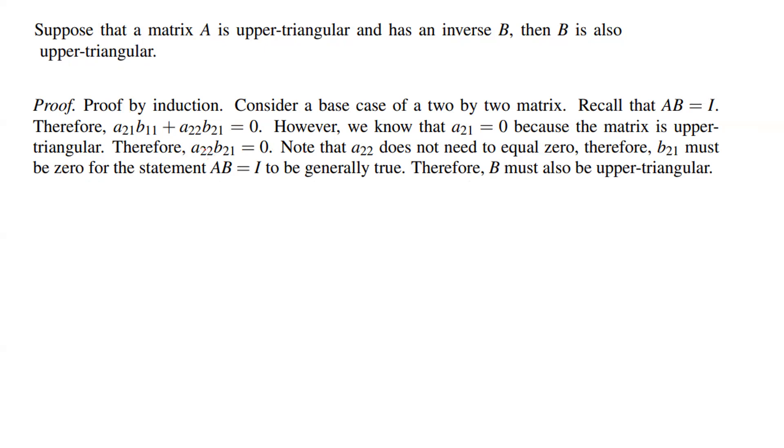Therefore, a₂₂b₂₁ must be equal to 0. Note that the entry on the main diagonal a₂₂ doesn't need to be 0. So b₂₁ must be equal to 0. For the statement AB = I to be generally true, therefore B must also be upper triangular.